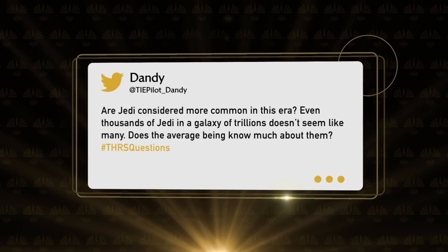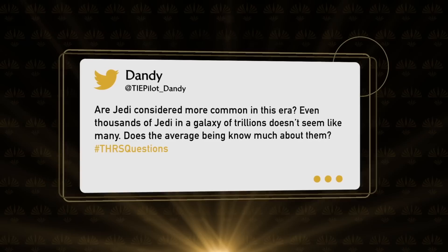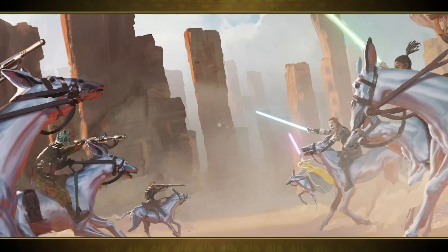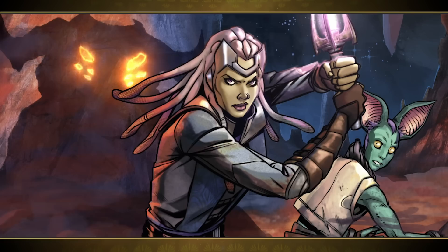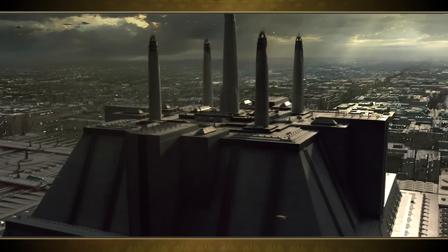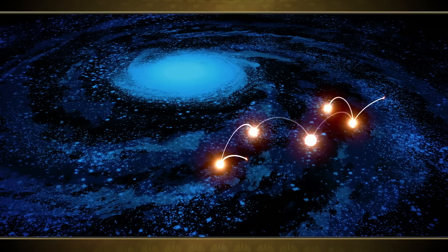The next question is from TyPilotDandy, who wants to know: 'Are Jedi considered more common in this era? Even thousands of Jedi in a galaxy of trillions doesn't seem like many. Does the average person know much about them?' I think the average being does know about them. I think they're more common than they ever have been in future eras — more spread out throughout the galaxy. In the High Republic, you'll see them in outposts and Jedi temples further than just in the galactic core. In the prequel era, we just see them on Coruscant — that's basically their reach. But in the High Republic, they're further and further out, reaching all the way to the outer rim, trying to shine the light of the Jedi as far as they can into the darkest corners of the galaxy.